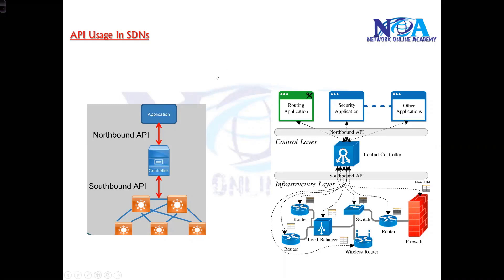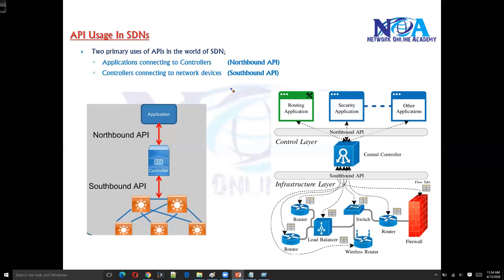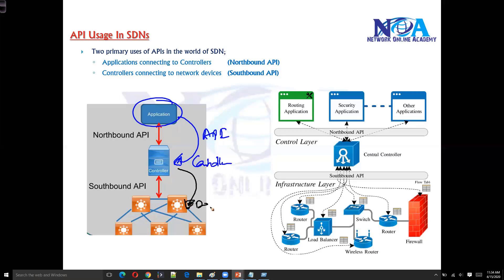Now with respect to SDN, there are two primary users of the API in our SDN networks. The first is applications — applications need to communicate with the controller, and that is where the API will be used. Also, we need to make sure that the controller should be able to instruct the networking devices, so again there is an API used.